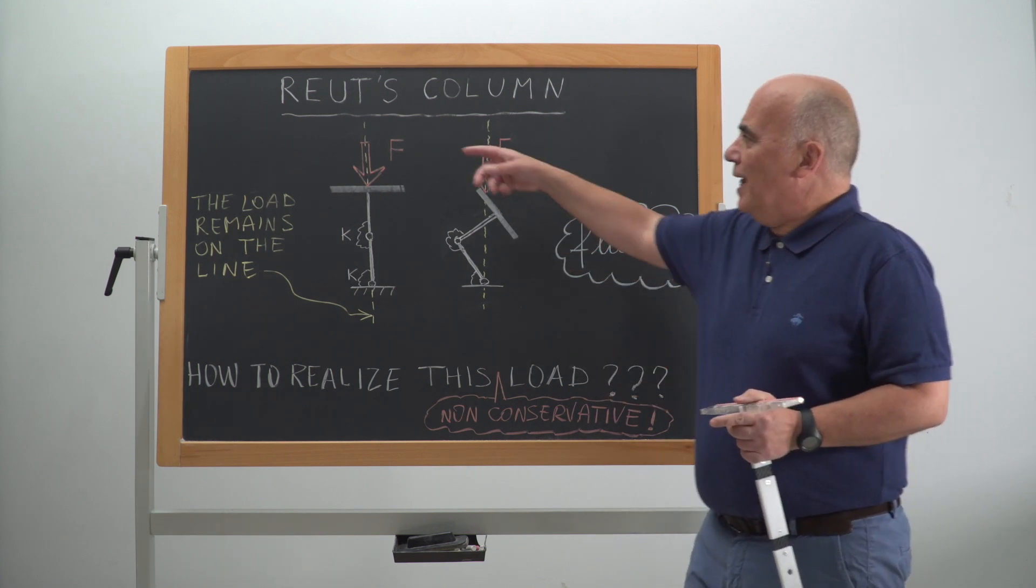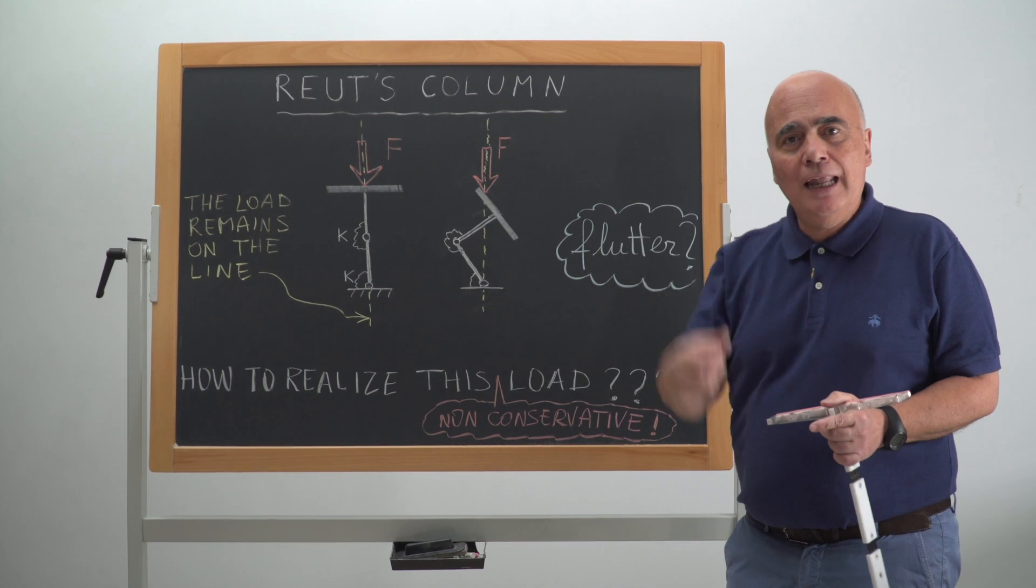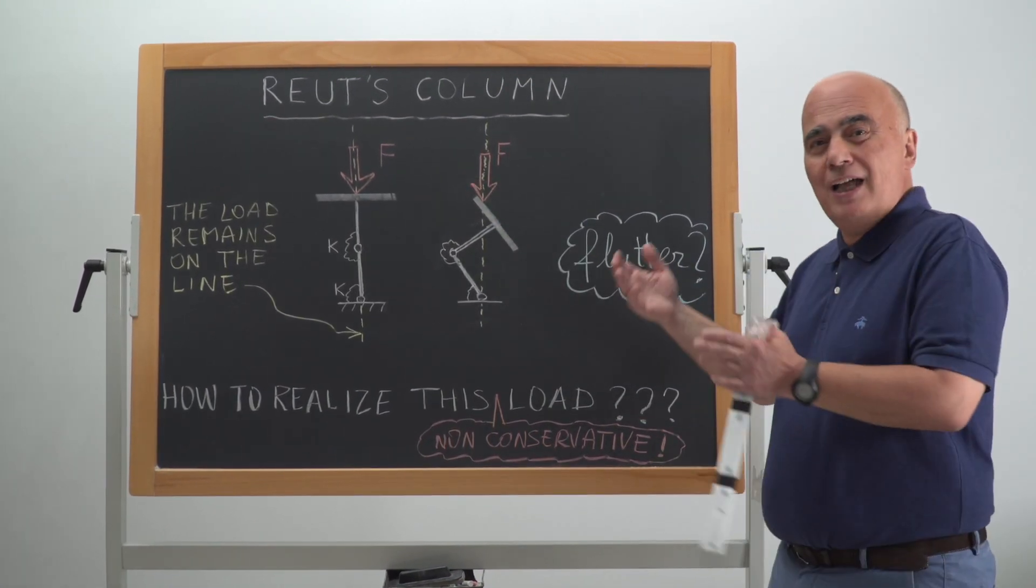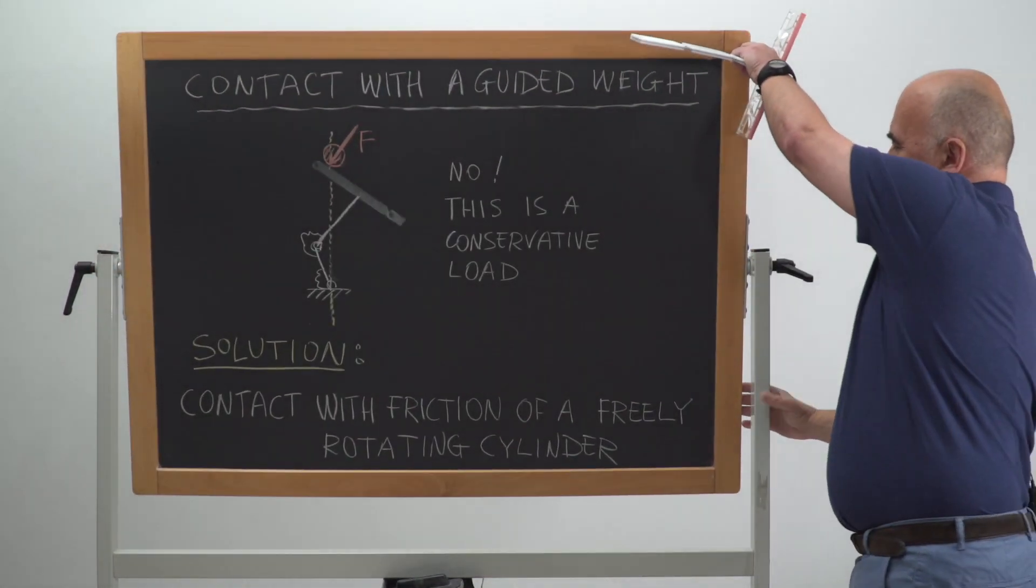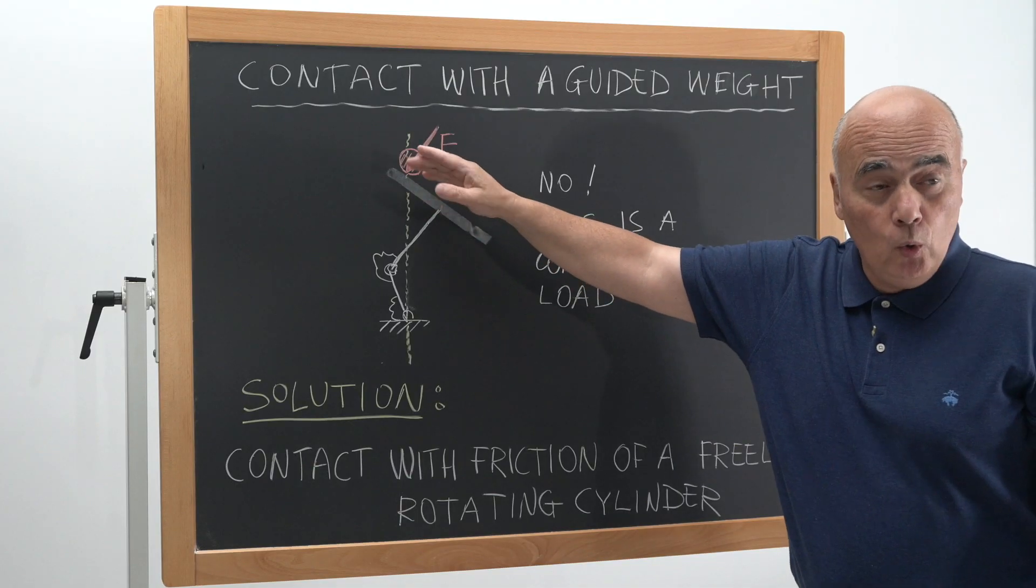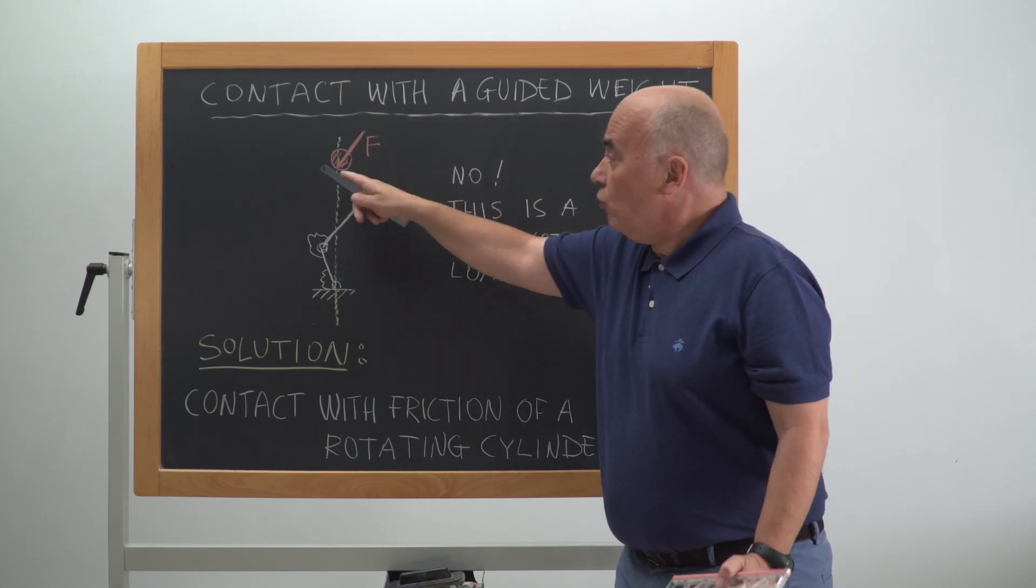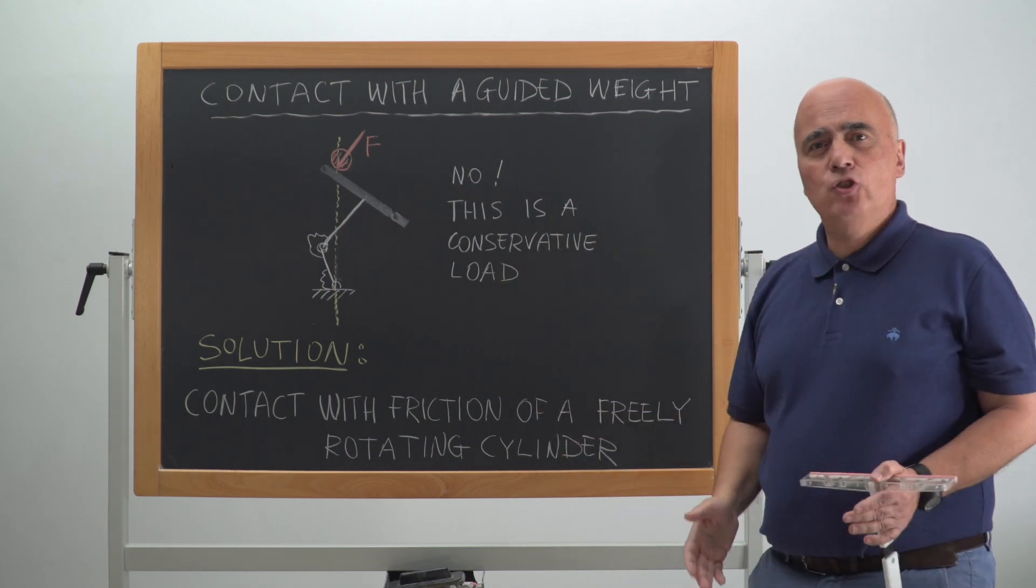Now, we can think, why not realize this load with a weight moving along a guide, a vertical line? Well, this would not be such kind of load because that would be conservative. And in fact, if we sketch that problem here, we see this is the weight. We see that if the contact is smooth with this element, then the reaction force would be orthogonal to it. So it would be a different load from that I have shown before.